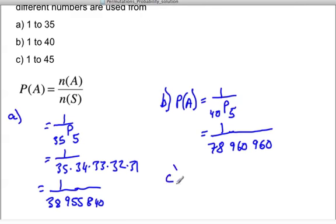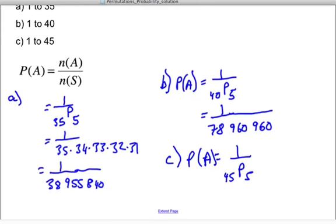And for C, the probability of cracking the safe if there are now 45 digits to choose from is going to be equal to 1 over the permutation of 45 choose 5, which is equal to 1 over 146,611,080.